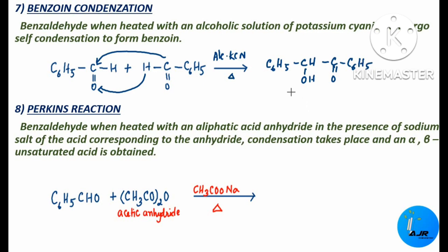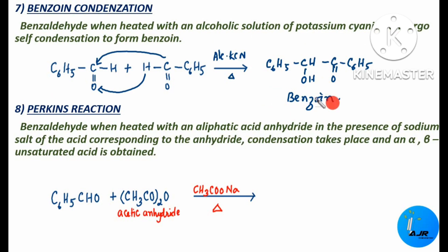The name of this compound is benzoin. This is an important reaction — benzoin condensation. Two molecules of benzaldehyde undergo self-condensation in the presence of alcoholic potassium cyanide to give benzoin.